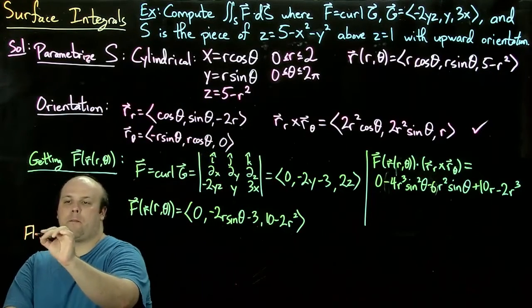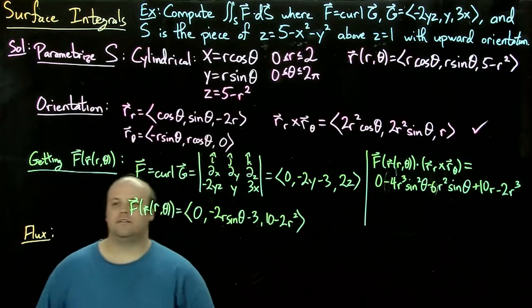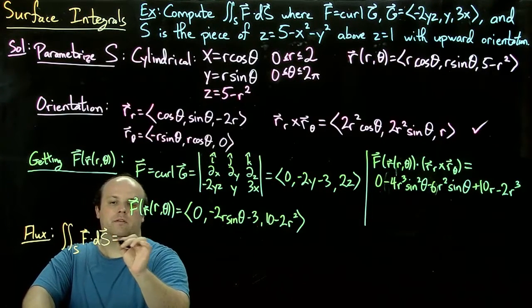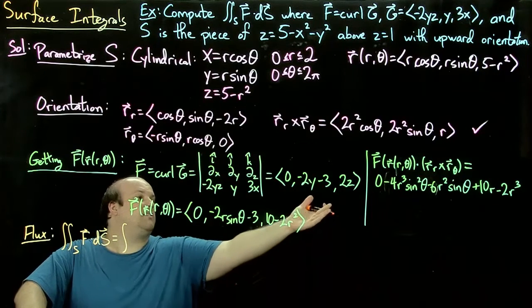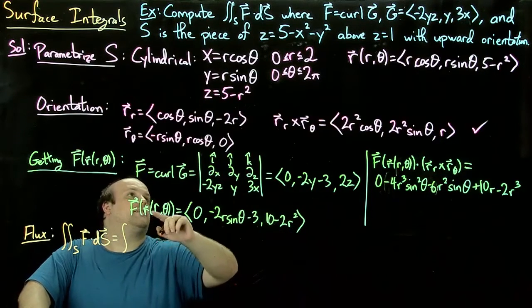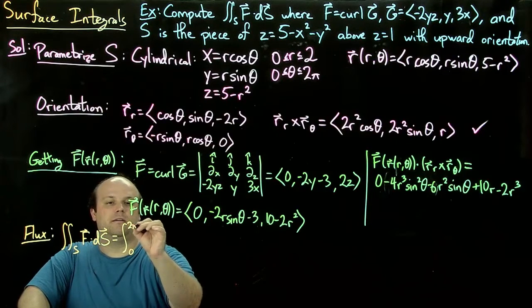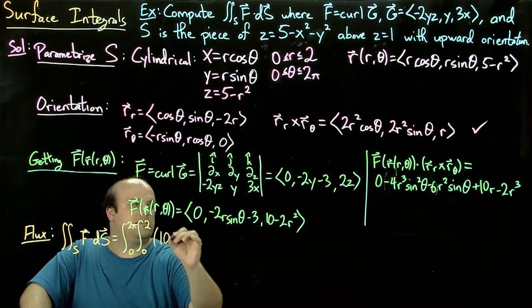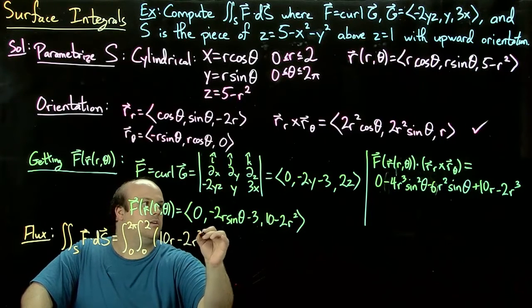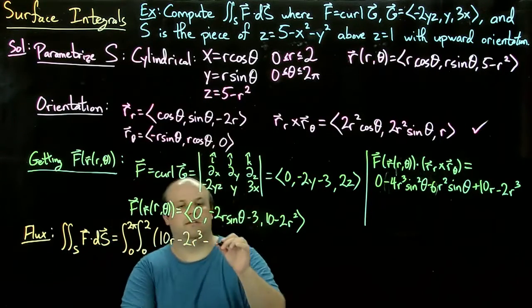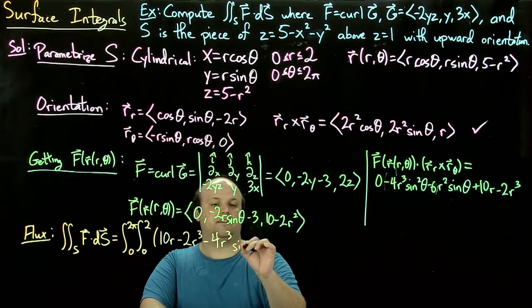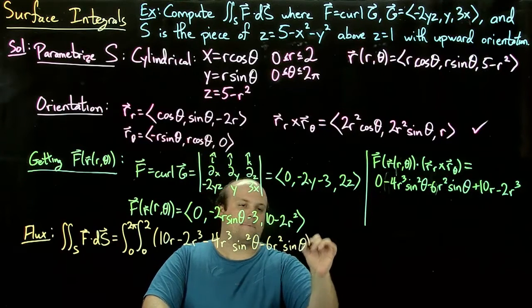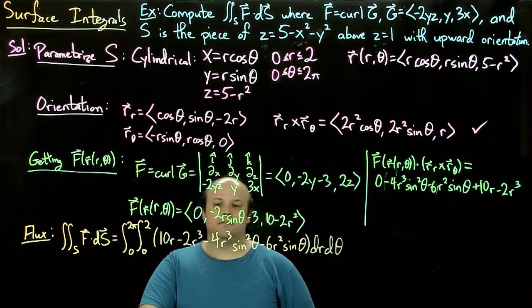Now we have to integrate that. The flux equals the double integral from 0 to 2π and 0 to 2 of 10r - 2r³ - 4r³ sin² θ - 6r² sin θ dr dθ.